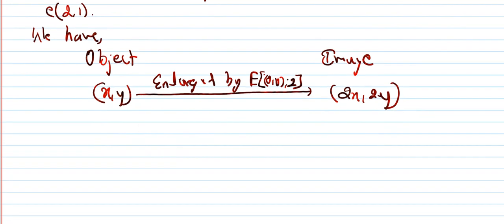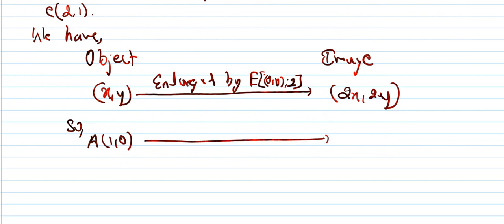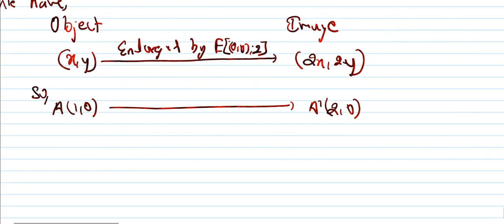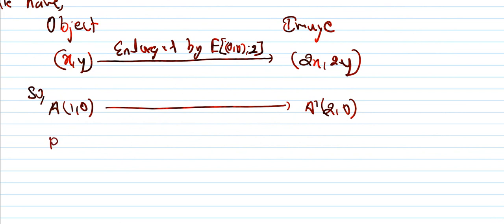So A-dash is (2,0) — this is the enlargement result. Then B is (0,2), so the enlargement gives B-dash (0,4).